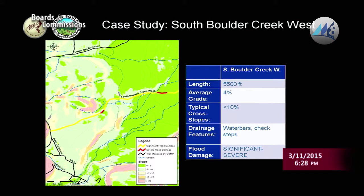The South Water Creek West Trail — the single-track portion — has an average grade of about 4%, but it's too steep for that hillside. It climbs relatively steeply up the cross slope, had a lot of prior fixes with water bars and check steps, and we had some pretty significant damage on that trail.